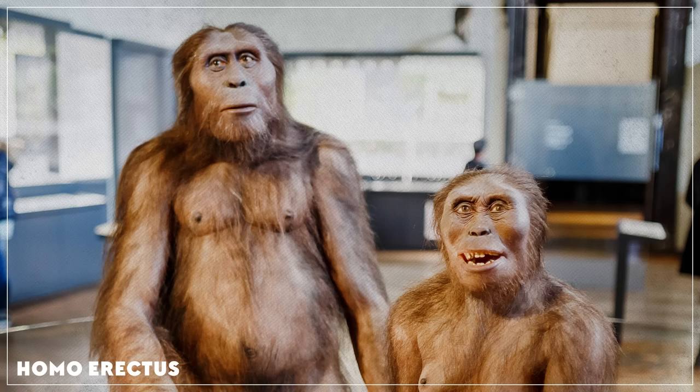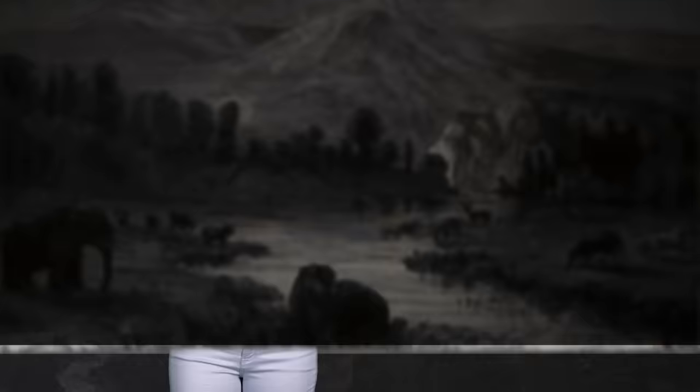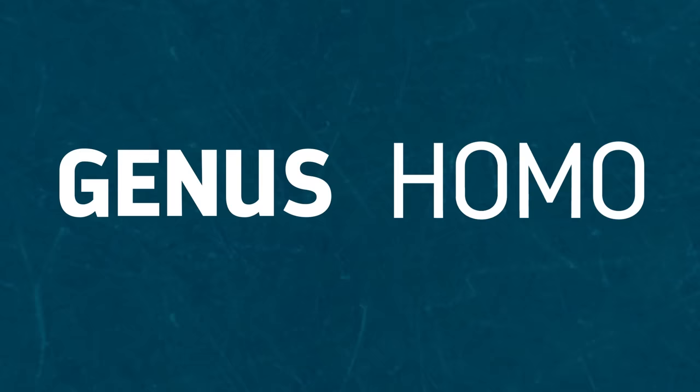So being part of the genus Homo puts you in a pretty exclusive group. It includes only our immediate ancestors and our very closest fossil relatives. The earliest fossil from our genus, a partial mandible or lower jaw from Ethiopia, is dated to 2.8 to 2.75 million years ago in the Pliocene epoch. We don't have enough of this jaw to know which species it belonged to, but it's thought to belong to a member of our genus because of its teeth.